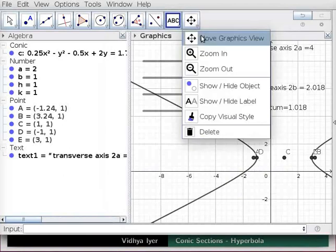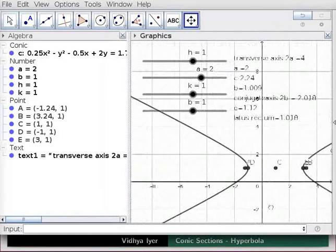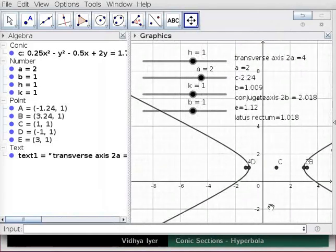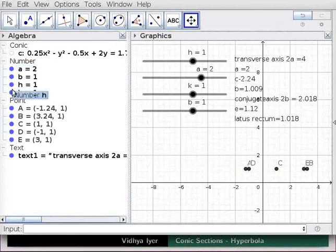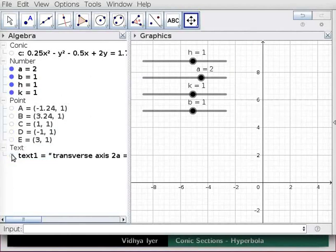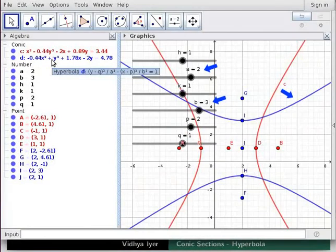Click on move graphics view and drag the background so you can see the hyperbola. Uncheck equation C and all points and text generated for hyperbola C in algebra view. Follow the earlier steps to construct hyperbola D for these two conditions.